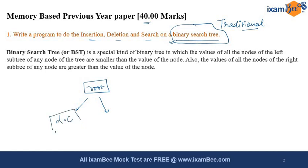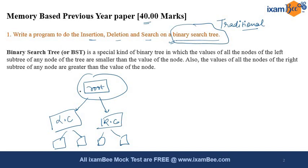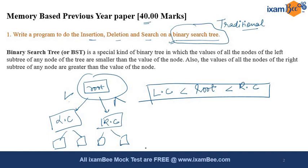At every node you will have its left and its right children. In a binary search tree, the root node's value will be greater than the left child and less than the right child — meaning the root value lies between the left and right child values. This property is followed at every level: each node is greater than its left child and smaller than its right child. This is what makes the binary search tree very different from other trees and gives it a special place.